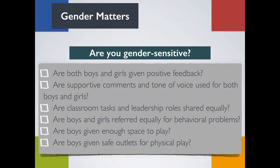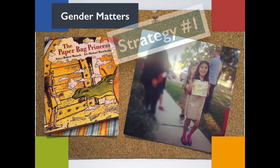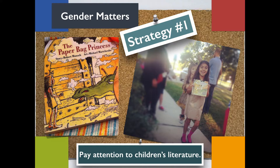Here are a few strategies to help promote positive learning experiences for children regardless of gender. Strategy number one: pay attention to children's literature. The main characters provide models, illustrations, and definitions of masculine and feminine behaviors. Can you think of books your students enjoy that may paint pictures of gender stereotypes? To combat stereotypical fairy tales, read The Paper Bag Princess, which exposes children to a story where the princess rescues the prince — portrayed as smart, courageous, and resilient.